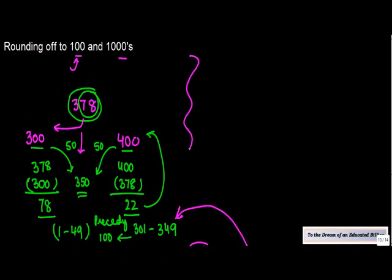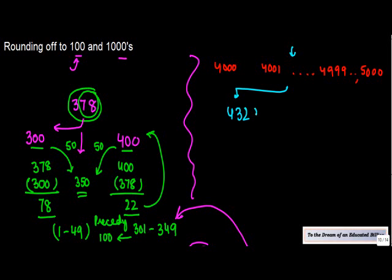Now, let's talk about 1000. The rules remain the same. So, let's say you have 4000, you have 4001, you have 4999, and then you have 5000. If I pick any number between these, let's say I pick two of them, 4329 and I pick up 4829.